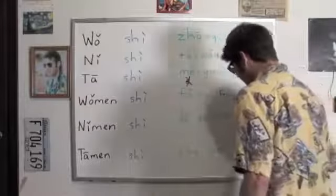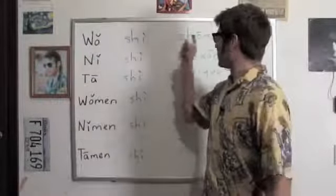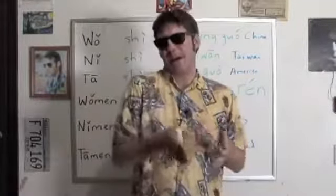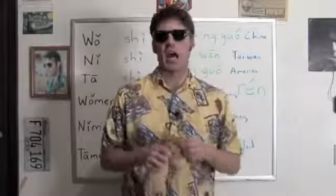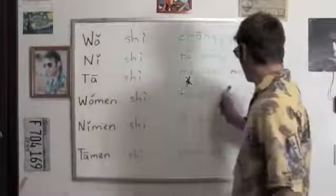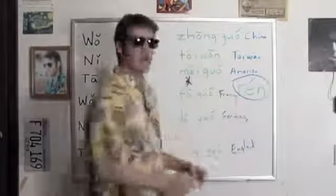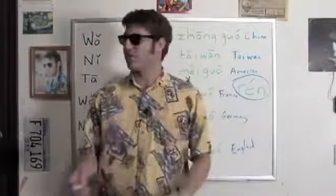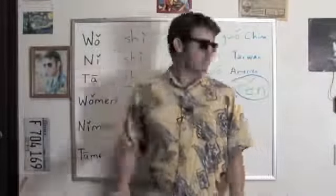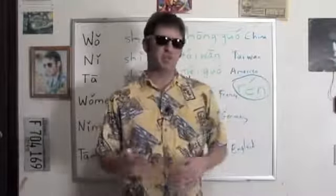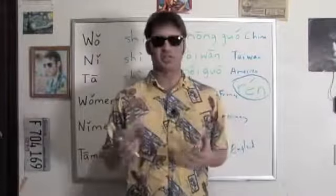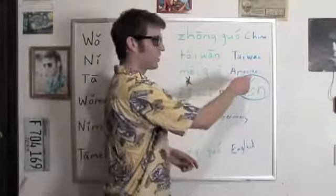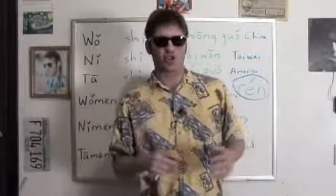But you wouldn't want to say 'I am China' — you'd say 'I am Chinese' or 'I am American.' We do this by adding the word 人, which means 'a person.' So 我是人 without a country name just means 'I'm a person,' just like 我是老师. But tack on the country name with 人, and now it's your nationality.